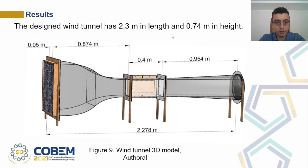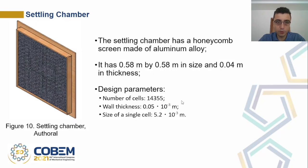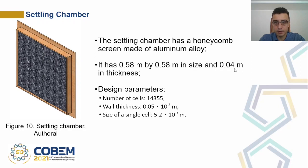The final result of the work is a wind tunnel with 2.3 meters in length and 0.74 meters in height. Here you can see the settling chamber, nozzle, test chamber, diffuser, and fan. The settling chamber has a honeycomb screen made of aluminum alloy, 0.58 by 0.58 meters in size and 0.04 meters in thickness. The design parameters include 4355 cells, with a wall thickness of 0.05 times 10 to the power of minus 3 meters.